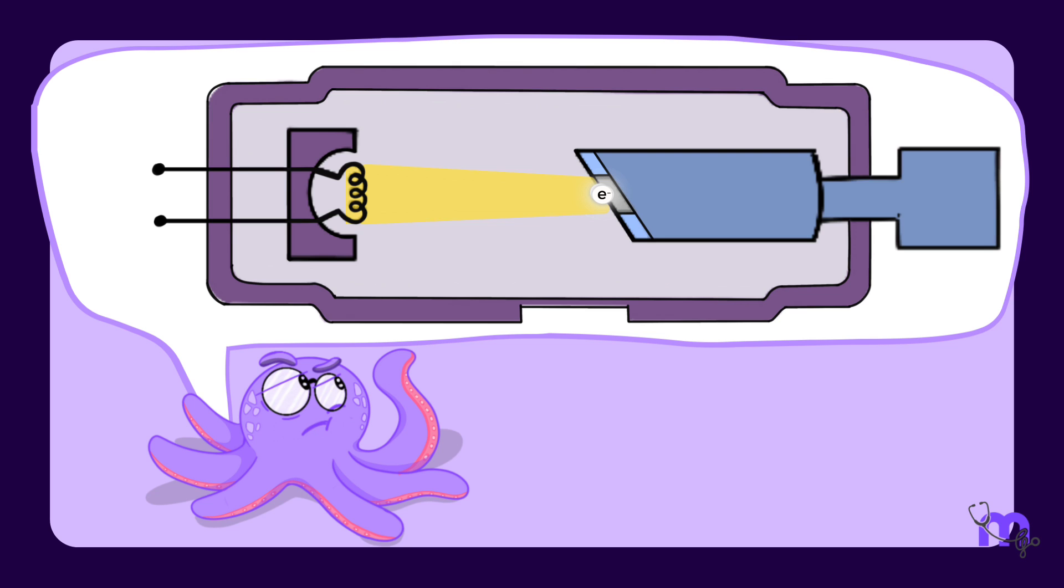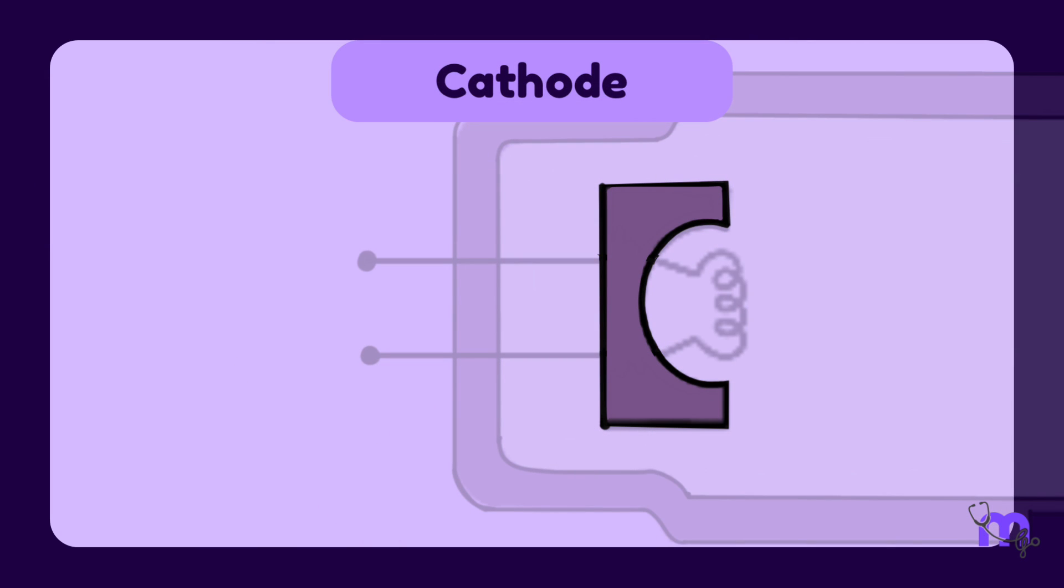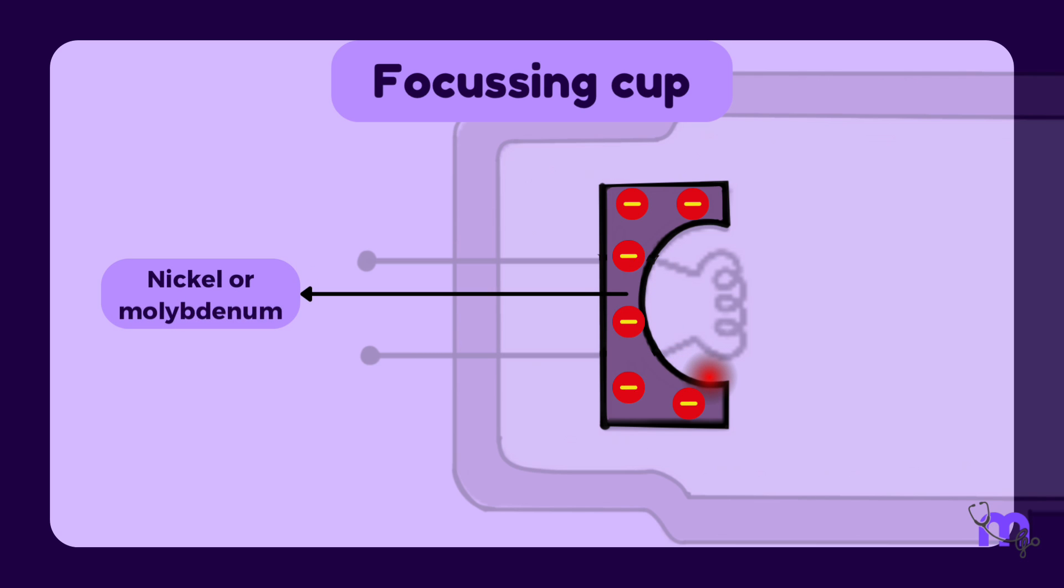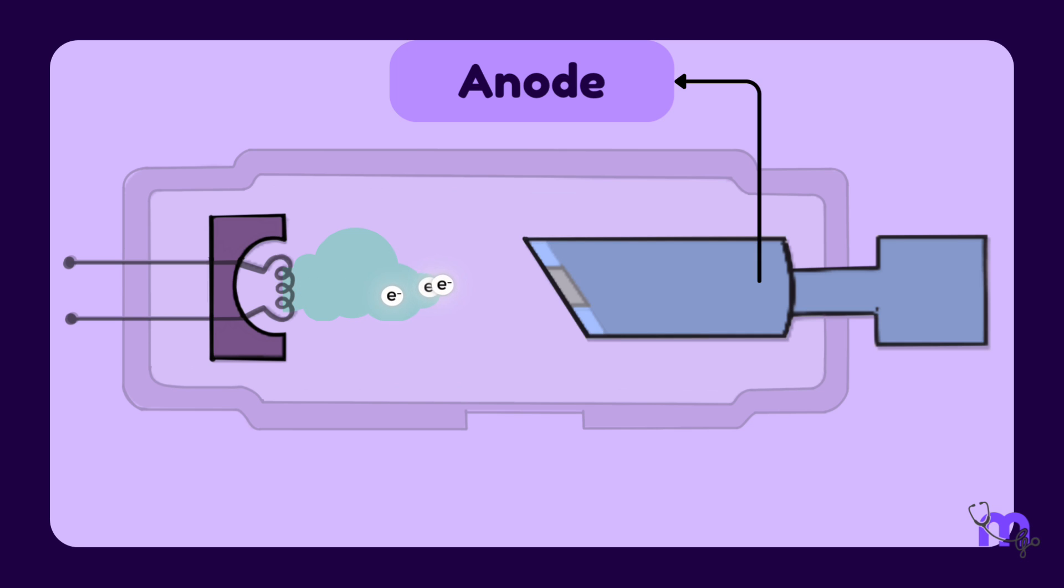What we need is a neatly channeled narrow beam of electrons that would further give us a narrow X-ray beam, thereby a good quality image. So here is where the other important component of the cathode called the focusing cup comes into play. This is a negatively charged concave reflector made of nickel or molybdenum. It repels all the electrons produced, pressing them back together. This restricts the size of the electron cloud, thereby producing a narrow electron beam which is directed at a small rectangular area in the anode called the target.